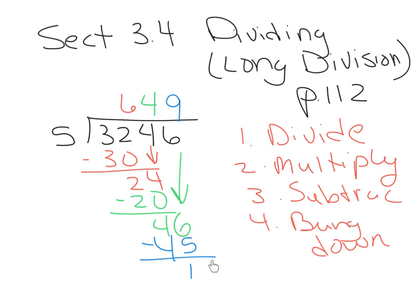Now we have nothing left to bring down. If we were going to make this into a decimal, we'd put a decimal point and bring down a 0. But with polynomials, we don't make them into decimals. So we're going to talk about what happens with this remainder — we're going to make it into a fraction. The remainder becomes the numerator of the fraction, so the remainder is 1. The divisor becomes the denominator. So the quotient turns out to be 649 and 1 fifth.